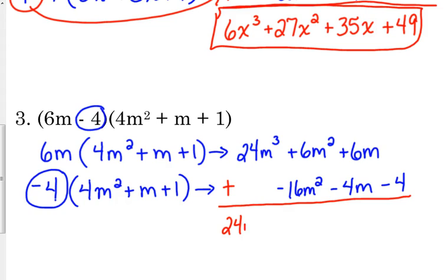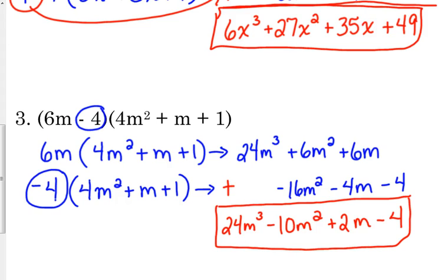So my 24m cubed doesn't have anything to add to it. 6 plus negative 16 is negative 10m squared. 6 plus negative 4 is positive 2m. And my negative 4 on the end doesn't have anything to combine with, so we just bring it in.